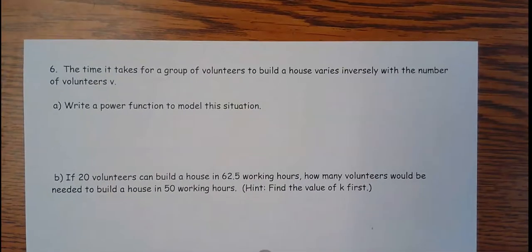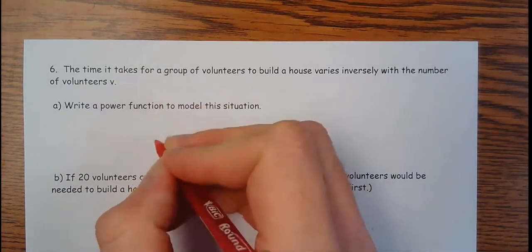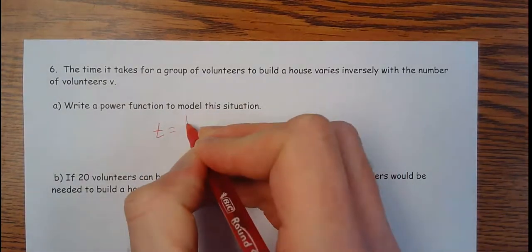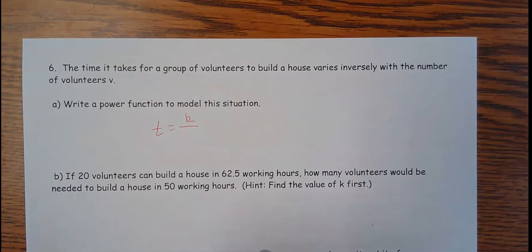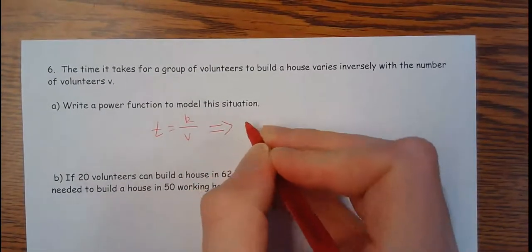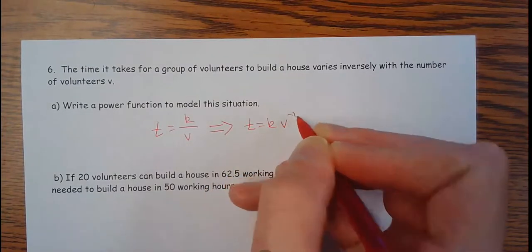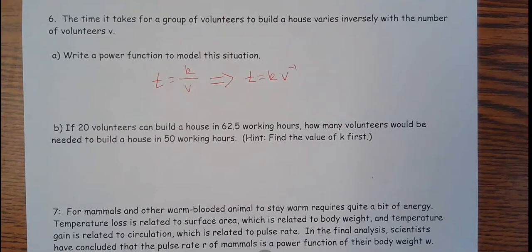Switching to the back side. The time it takes for a group of volunteers to build a house varies inversely as the number of volunteers. It makes sense that if you have more people working, it's going to take less time. Many hands make light work. So if you have more people, we have to do less work, and it happens faster. So write a power function for the situation. The time it takes varies inversely as the number of volunteers, v. If I need to write this as a power function, t equals k, v to the negative 1.